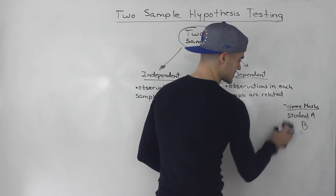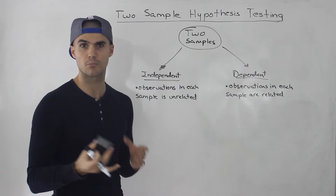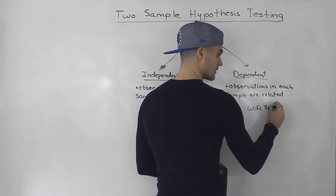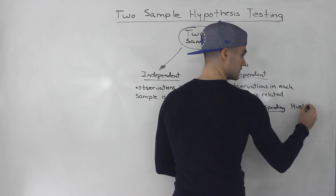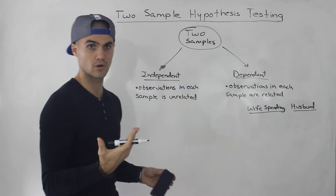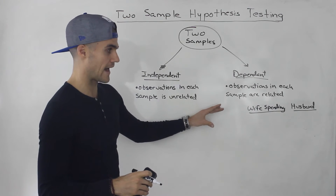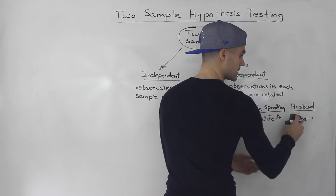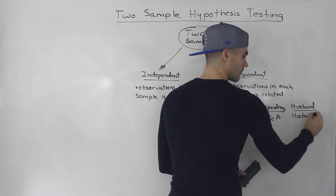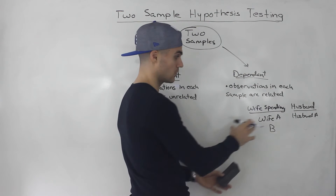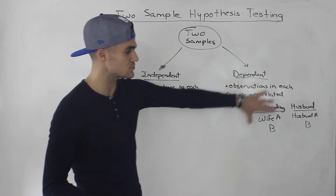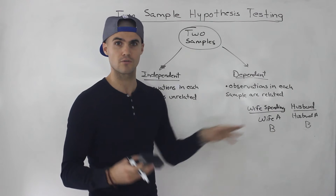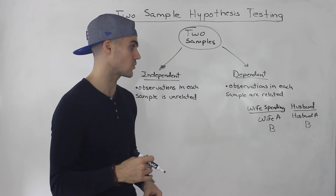Another example: testing a couple's spending in a certain store — how much the wife is spending versus how much the husband is spending. You'd look at each couple separately: wife A versus husband A, then wife B versus husband B, and so on. These two samples are related because of marriage — we're checking whether there's a difference between how much a husband spends versus how much a wife spends at a store.